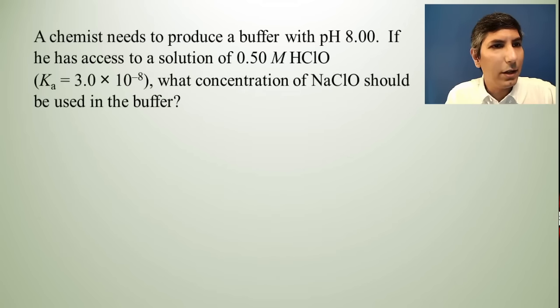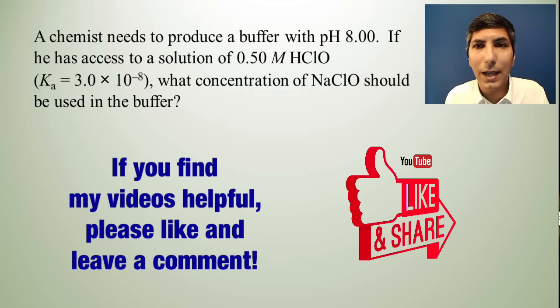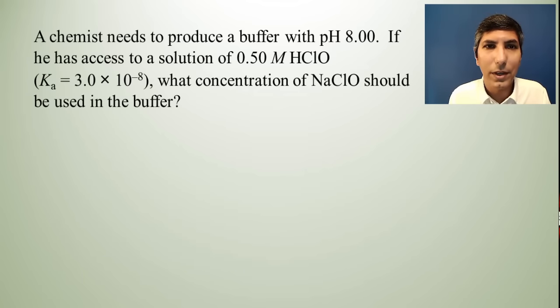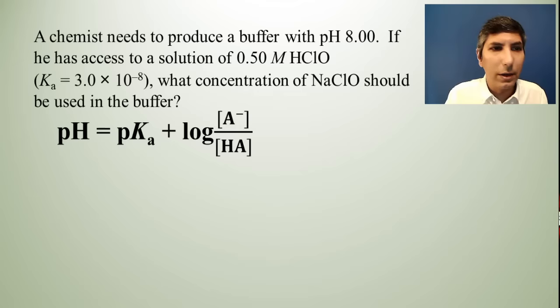Let's try another example. This one might be a little bit tougher. This one says, a chemist needs to produce a buffer with pH 8.00. If he has access to a solution of 0.50 molar hypochlorous acid, which has a Ka of 3.0 × 10⁻⁸, what concentration of sodium hypochlorite, NaClO, should be used in the buffer. So once again, we're talking about the pH of a buffer. So you want to use the Henderson-Hasselbalch equation. pH equals pKa plus log of the conjugate base over the concentration of the acid.